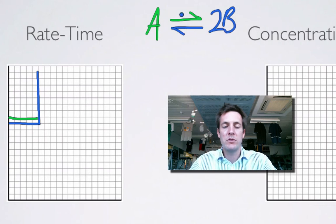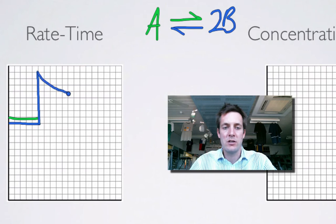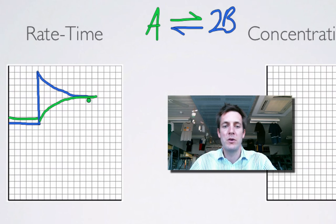Le Chatelier's principle says we're going to try and use up B — to remove the products that I've added — and so the way the system does this is by favouring the backward reaction. As B gets used up, this reaction is going to gradually slow down, and as we form more and more A, the forward reaction is going to gradually speed up. They're going to reach the same height because they've returned to equilibrium, and they're going to carry on at the same level until we make some other kind of change.